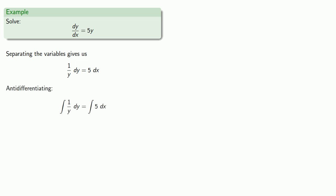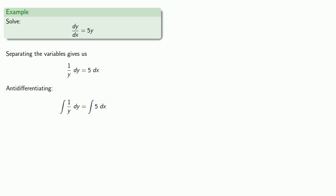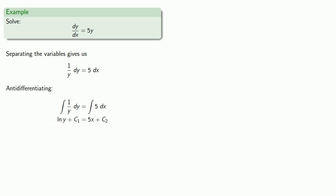Now we can antidifferentiate both sides. It's useful to remember that the differential variable is controlling — on the left-hand side, our differential variable is y, so the only variable we're allowed to have there is y, and we have it. On the right-hand side, our differential variable is x, so the only variable we're allowed to have there is x, and we have that as well. So we'll find the antiderivatives. Remember, we get constants of antidifferentiation every time we find an antiderivative. Since our goal is to find y, let's go ahead and solve this equation for y with a little bit of algebra.